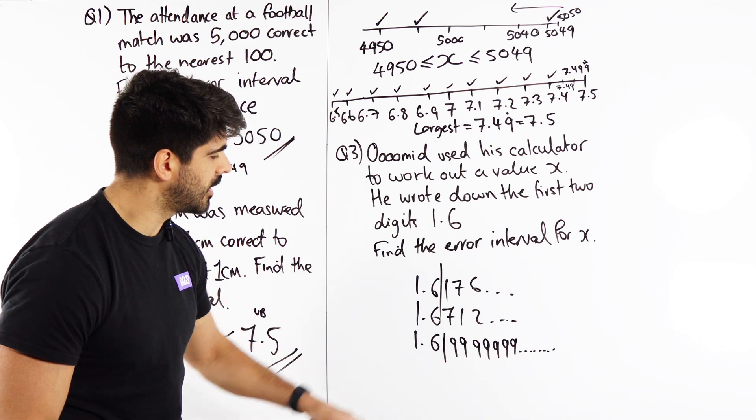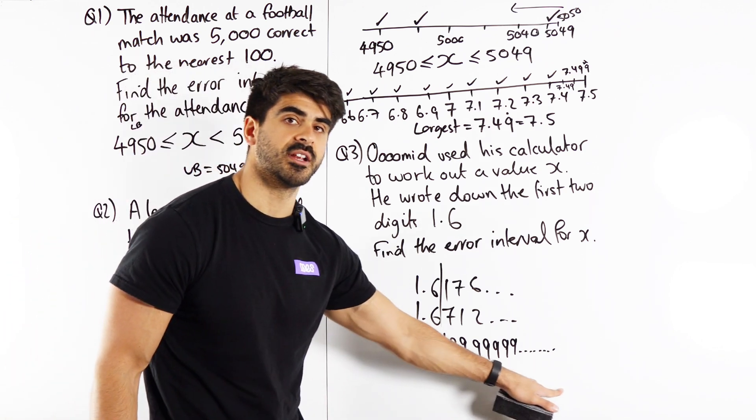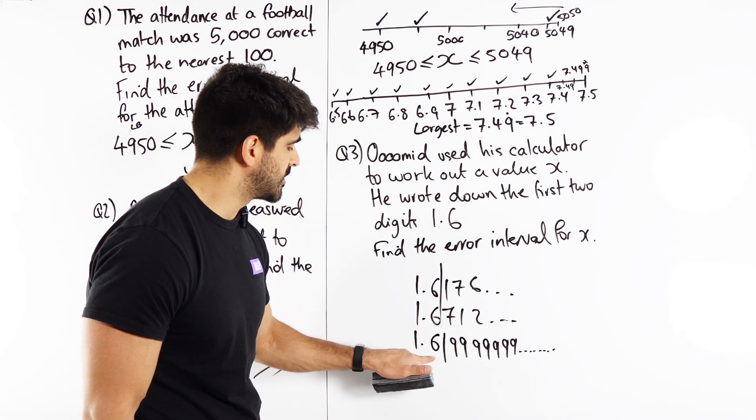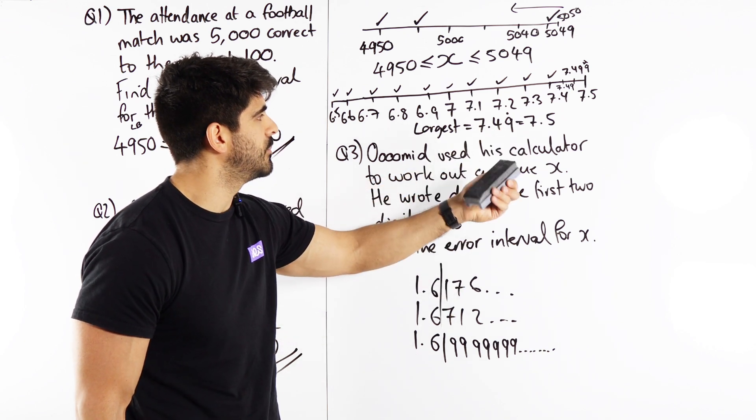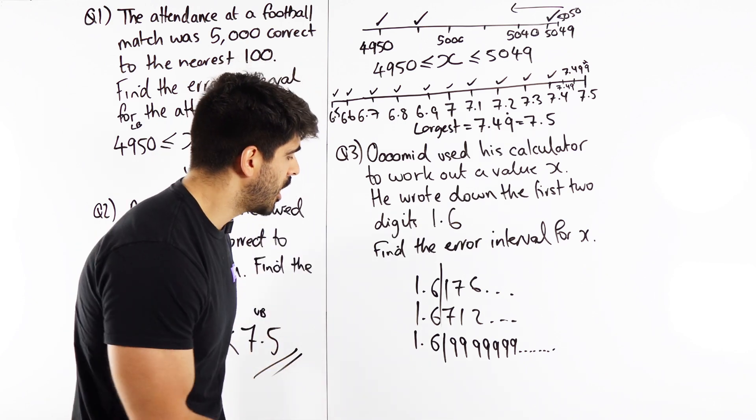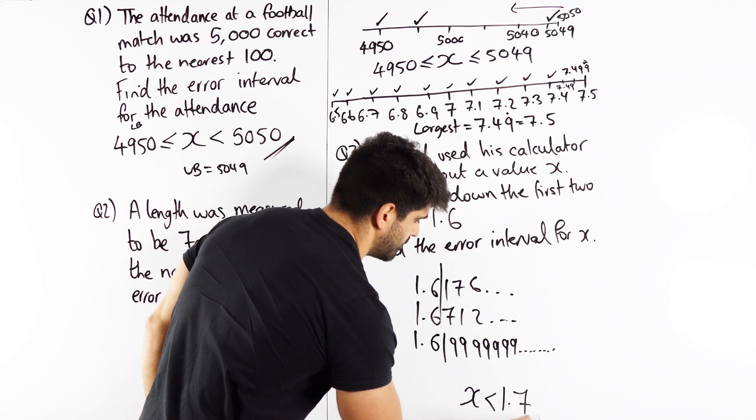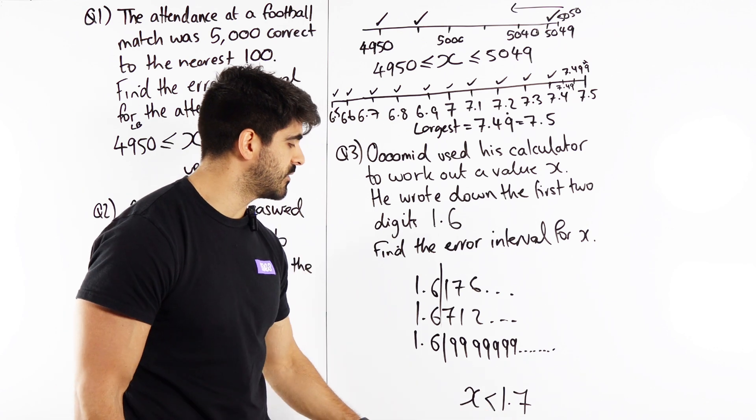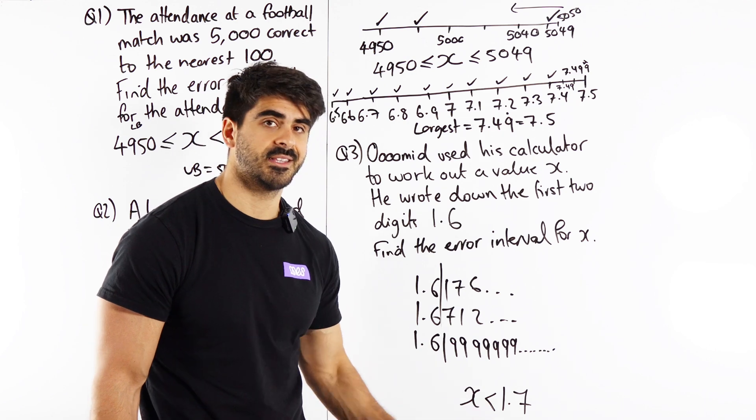But guys if you type that in your calculator 1.69 recurring, what number is it going to tell you? Well, the 9 rounds the 6 up to 7. Just like here, the 9 rounds the 4 up to 5. It becomes 7.5. You can type in your calculator. Your upper bound for x is 1.7. But not equal to 1.7. Remember 1.700 would not truncate to 1.6 but any number less than that would.